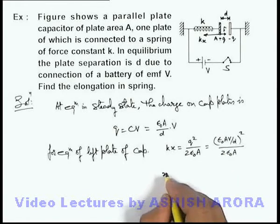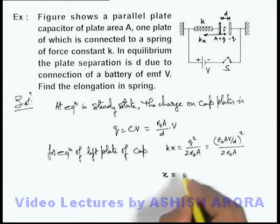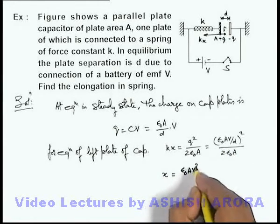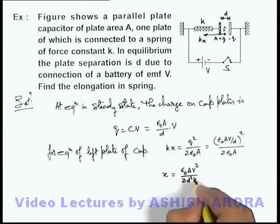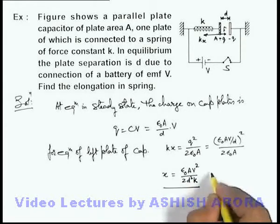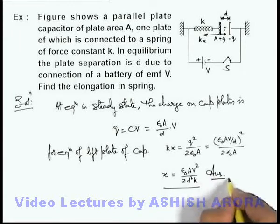So finally, the elongation in spring can be given as epsilon not A V squared by 2 d squared k. That is the elongation in spring, and that will be the answer to this problem.